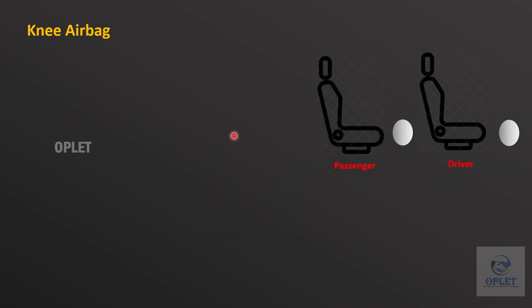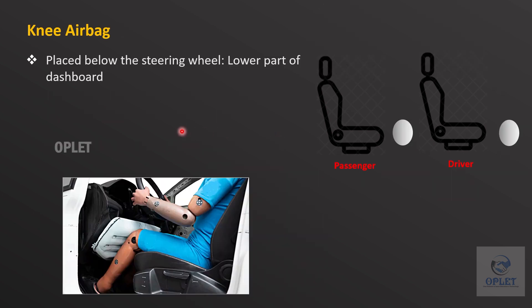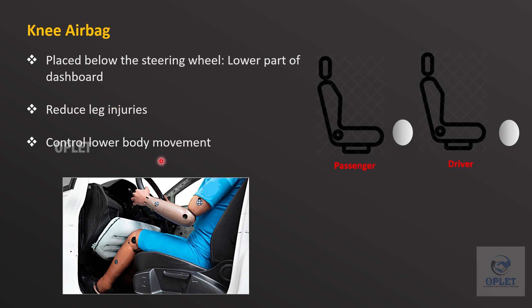For knee airbags, they are placed below the steering wheel or at the lower parts of the dashboard. Knee airbags are used to distribute impact force to reduce leg injuries. They also help to reduce forces on the occupant's chest and abdomen by controlling lower body movement.